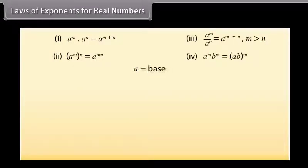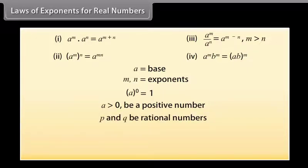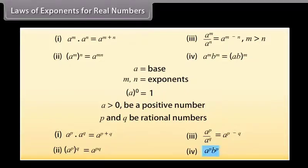Here, A is called the base and M and N are the exponents. A raised to the power 0 is 1. Now let A > 0 be a real number and P and Q be rational numbers. Then: in multiplication, when bases are the same, powers are added; two powers of the same base get multiplied; in division, when bases are the same, powers are subtracted; and when powers are the same and bases are different and are being multiplied, we take the power as common.